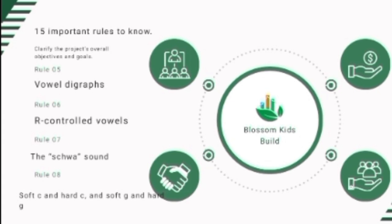Rule number six: R-controlled vowels. When a syllable has a vowel that is followed by R, the vowel is controlled by the R and makes a new sound. Examples include 'car,' 'bird,' 'germ,' 'form.' This rule is sometimes called 'bossy R' because the R bosses the vowel into making a new sound. We call these R-controlled vowels.